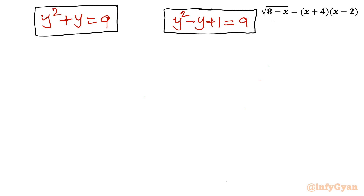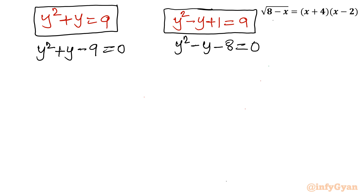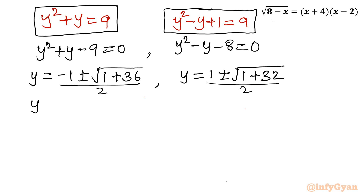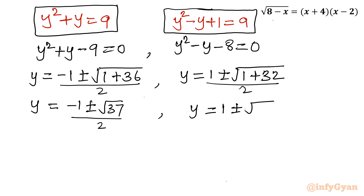Remember y equals x plus 1. Applying the quadratic formula to both equations: for the first, y equals (minus 1 plus or minus square root of 37) over 2; for the second, y equals (1 plus or minus square root of 33) over 2. Converting back to x using x equals y minus 1 gives x equals (minus 3 plus or minus root 37) over 2, and x equals (minus 1 plus or minus root 33) over 2.